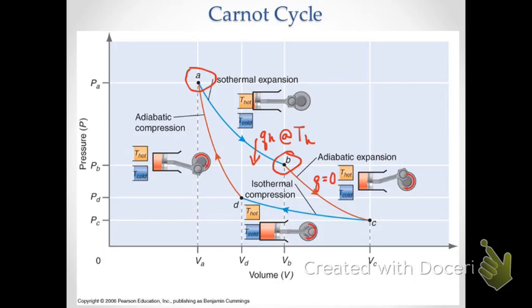Step two begins at point B and goes to point C, and that's an adiabatic expansion in which there is no heat flow. The heat source is removed from thermal contact with the engine at that point, so there's no heat flow into the system — it's just a simple adiabatic expansion. In these expansion processes, the work is negative because the system is doing work on the surroundings, and this is the part of the process where we get work out of the system.